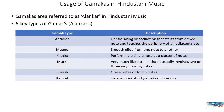Hindustani music also has a well-developed system of Gamakas called Alankas. There are basically six key types of Alankas — they are either a slide, a trill, or a shake between the notes. Like Carnatic music, only certain types of Gamakas or Alankas can be used with a specific raga.